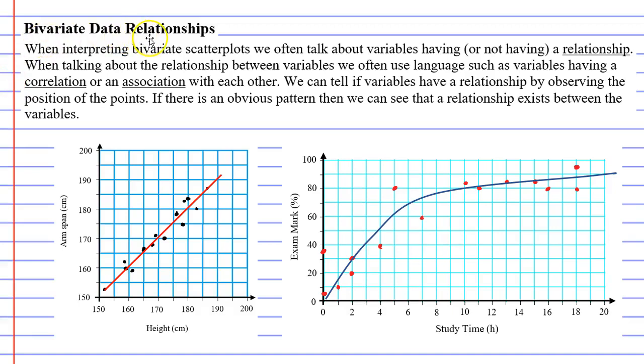Bivariate data relationships. When interpreting bivariate scatter plots, we often talk about variables having or not having a relationship. In the images below, I've got two scatter plots that we did in a previous lesson. Both of these scatter plots showed a relationship between the two variables.